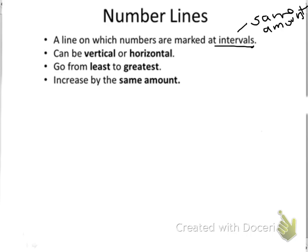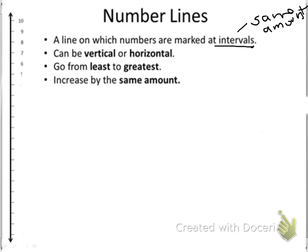They can be vertical, which means up and down, like this one. So this number line is vertical, and it goes up and down. Or, they can be horizontal, like this one.